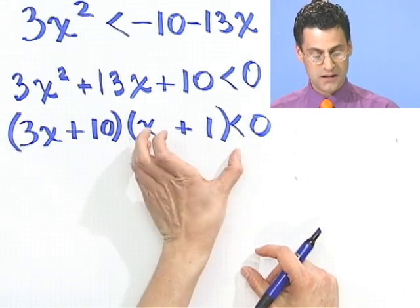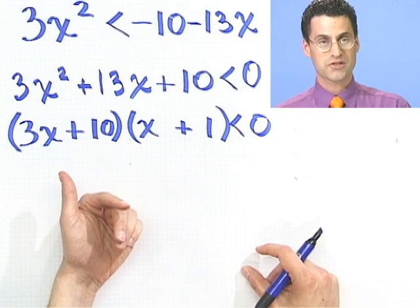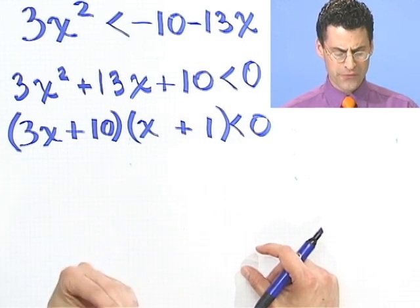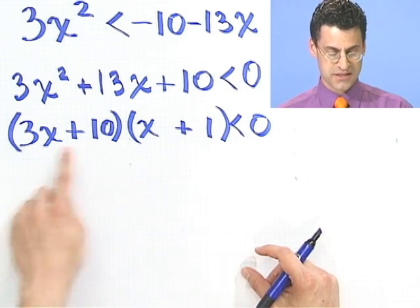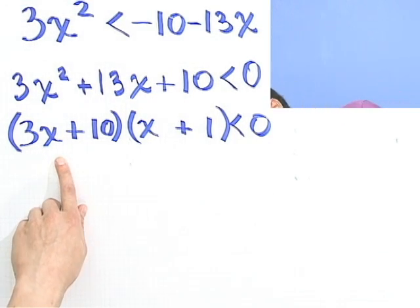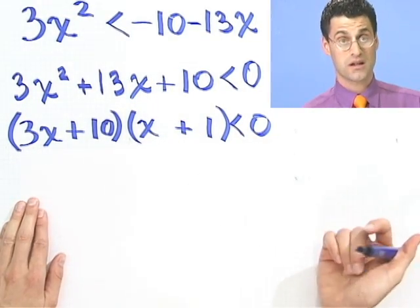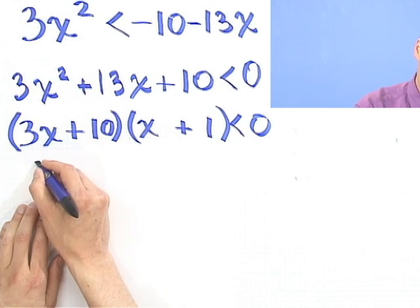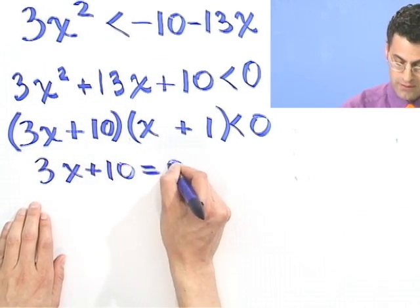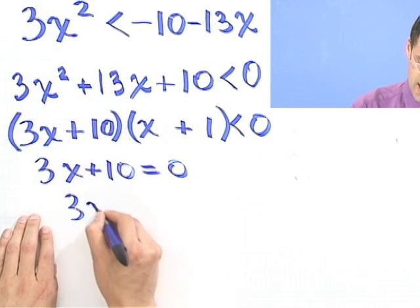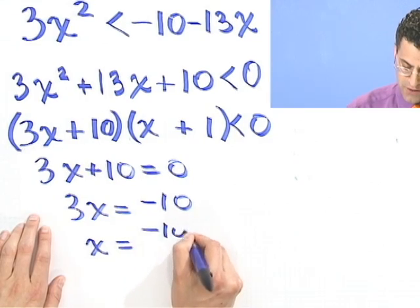So when I foil this out, I actually see the middle term, and then this times that gives me the 10. So looking okay. All right, so now I've got this product of two things that result in something that's negative. So now how do I actually solve this? I'm going to make a sign chart. And so the first thing I have to find out are where on the sign chart does this thing actually vanish. So when does that equal 0? Well, let's take a look and see. So first of all, I set this equal to 0 and solve. So this could be 0 when 3x + 10 equals 0. Well, that means that 3x equals -10, and if I divide by 3, that means that x equals -10/3.